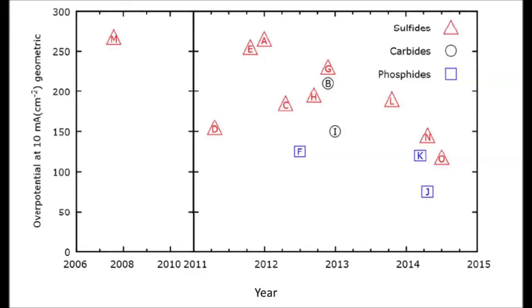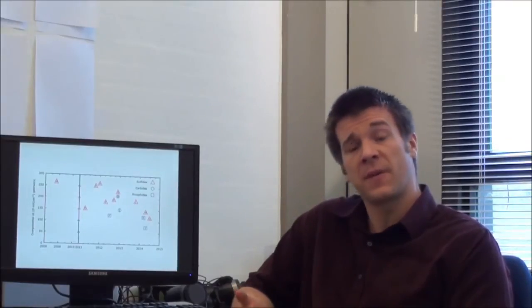At the same time while we work on these molybdenum sulfides people have also been working on other materials such as molybdenum borides and molybdenum carbides and a couple other materials. The really interesting material that has recently came up is the phosphides. There's been nickel phosphide, cobalt phosphide, molybdenum phosphide, and tungsten phosphide. All are extremely efficient with some of them being even more efficient than molybdenum sulfide.